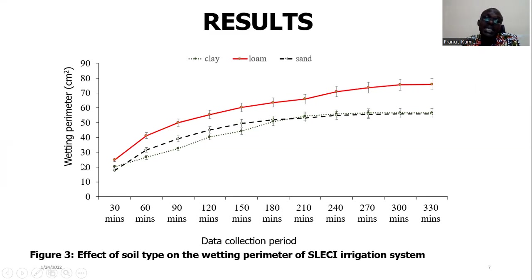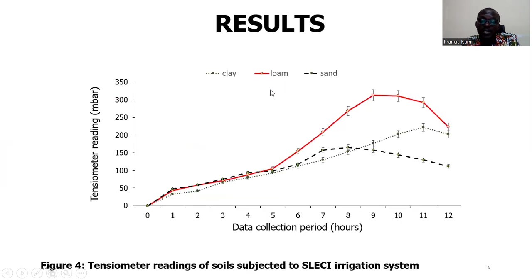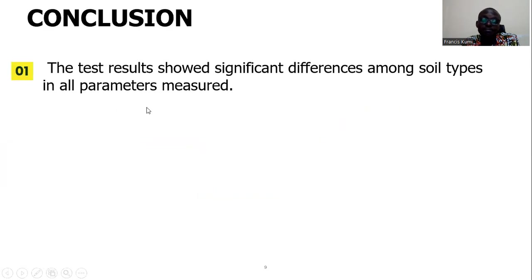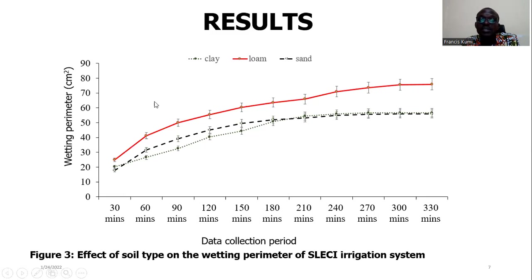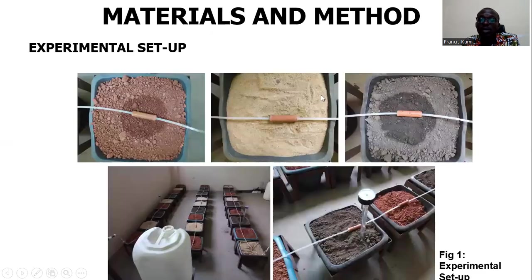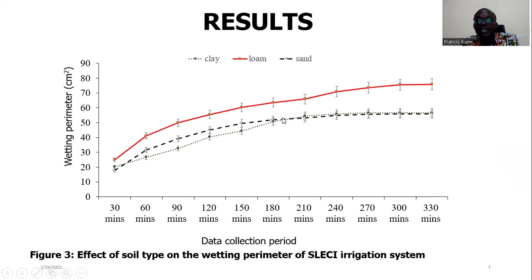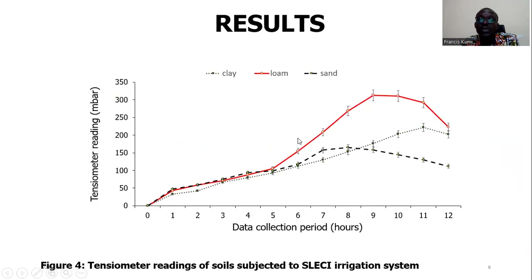When we placed the SLECKY system in the different soil types, we found that the wetting pattern of the loam stood out clearly. The sand sometimes overtook it a little but the clay caught up as the experiment continued. The loam soil clearly had the highest wetting pattern, and the tensiometer reading also recorded the highest value in the loam soil.